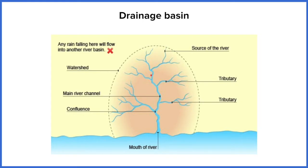Our main river channel is the largest river that flows through the drainage basin. Where a river starts is called the source, and every single one of these little branches — which are called tributaries — will have its own source. A tributary is a smaller river, and each main river will have lots of tributaries. Where two rivers meet, whether two tributaries or a tributary joining the main river, this is called a confluence — that's the meeting point of two rivers.